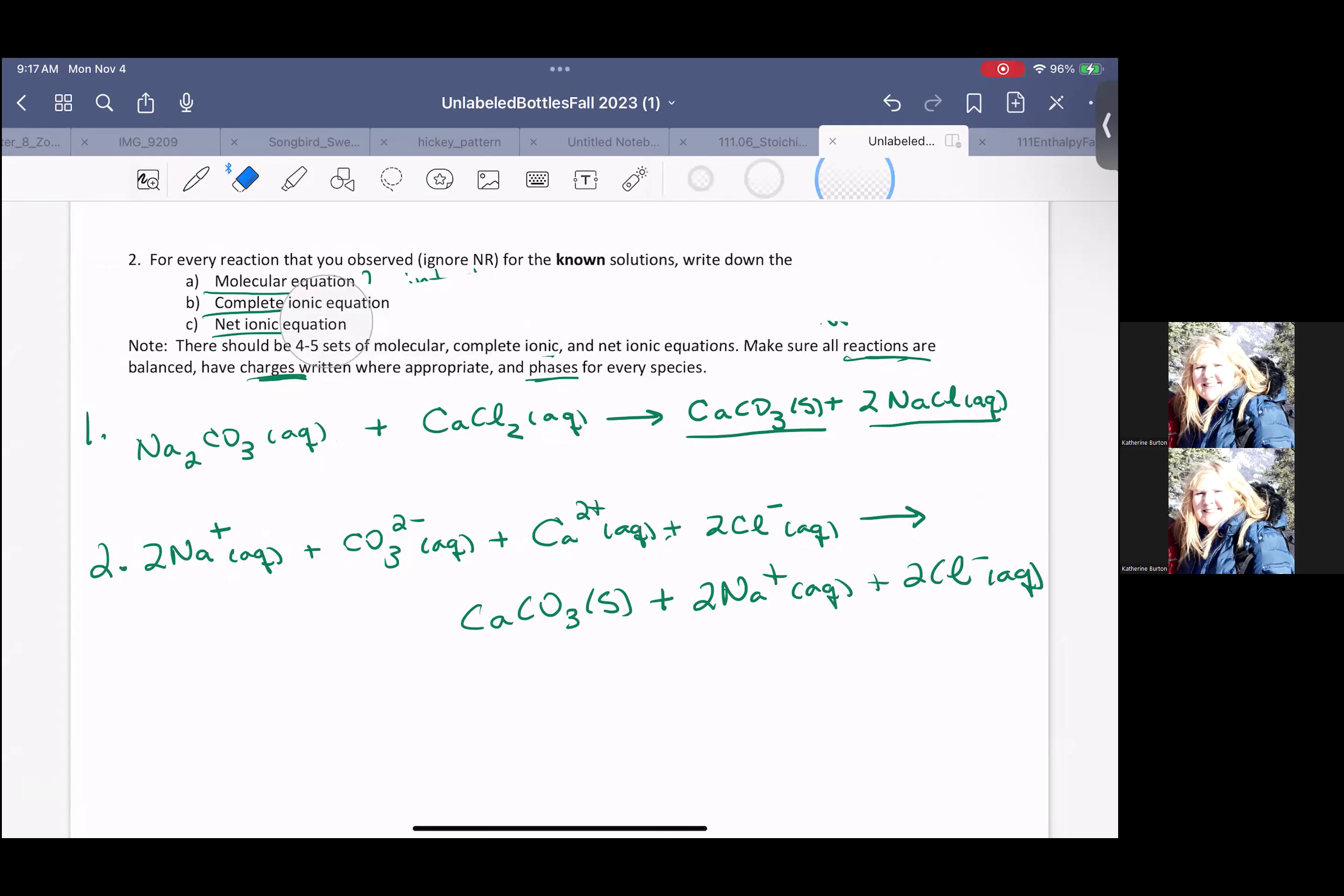I need to do my last part here, which means I need to identify the spectators. You remember the spectators are not involved. They're in the same state on both sides of this. And I need to remove them to write my net ionic. So my net ionic is what actually happens. So what actually happens here is my carbonate finds a calcium and makes calcium carbonate.